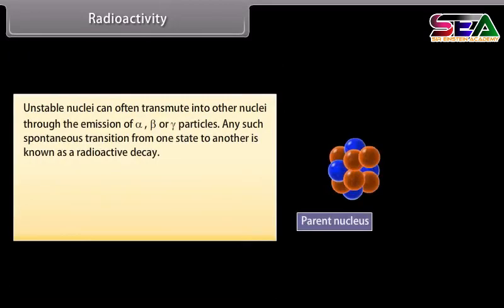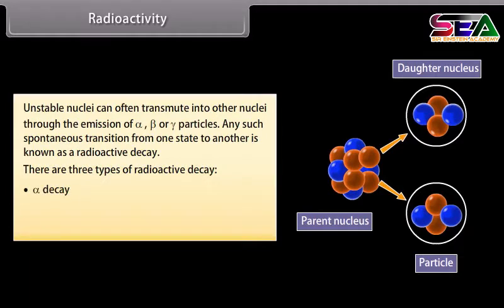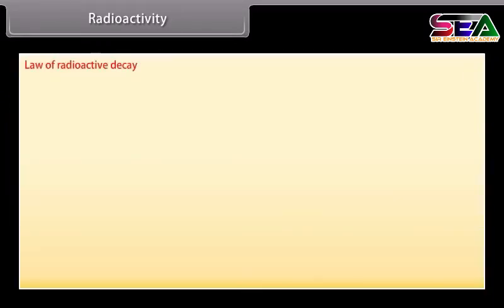Radioactivity: Unstable nuclei can often transmute into other nuclei through the emission of alpha, beta, or gamma particles. Any such spontaneous transition from one state to another is known as radioactive decay. There are three types of radioactive decay: alpha decay, beta decay, and gamma decay.